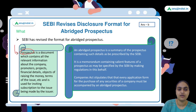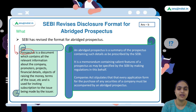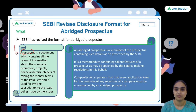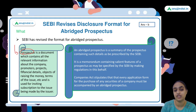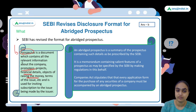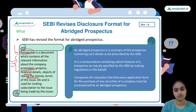Companies raise money by issuing their securities to the public. When making a public issue, they need to share a document containing all necessary details about the company. This document helps investors know about the company and decide whether they would like to invest. A prospectus contains financial details, the objective of raising funding, and the terms of the issue.